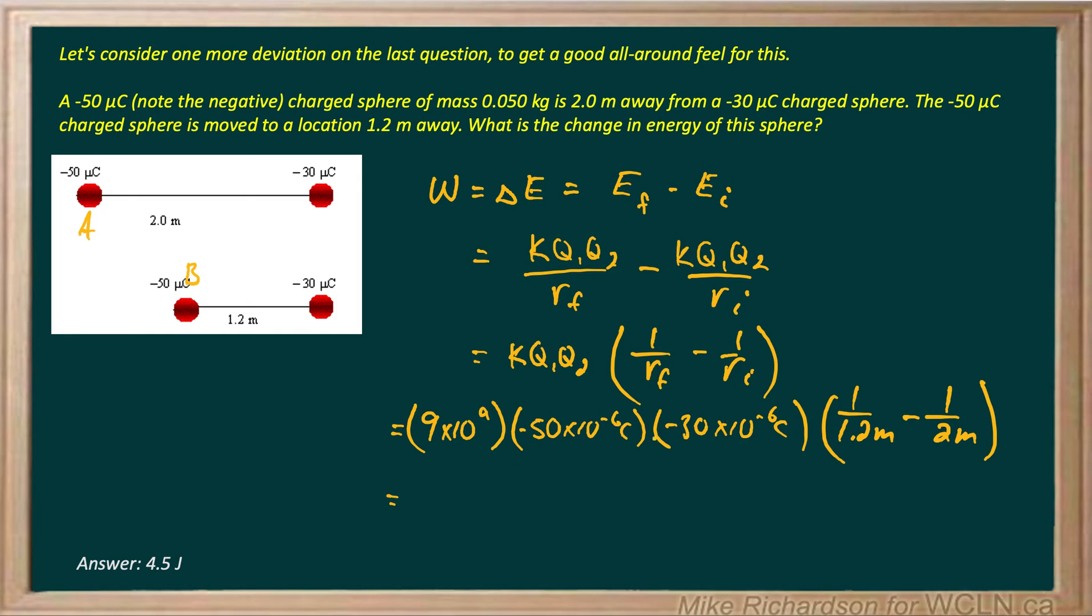And two negatives when they multiply together make a positive. And when all is said and done, the work required or the change in energy to go from A to B is a positive number, which makes sense. I have to put effort into this to get it to squeeze closer to the other negative charge since it's naturally repelling it. So in order to move from A to B, a force is required over a distance. So I'm doing, I'm giving it more energy.